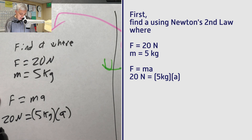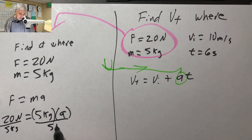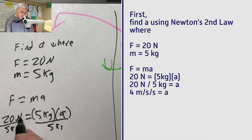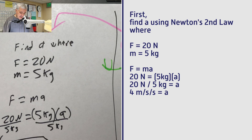A lot of times students like to draw the line and actually show the division, so we'll do that. Divide both sides by 5 kilograms — the 5 kilograms cancel. 20 divided by 5 is 4. Newtons divided by kilograms is meters per second squared, so a equals 4 meters per second squared.